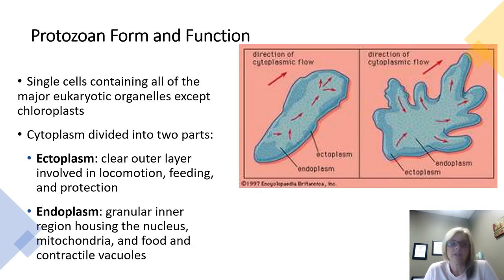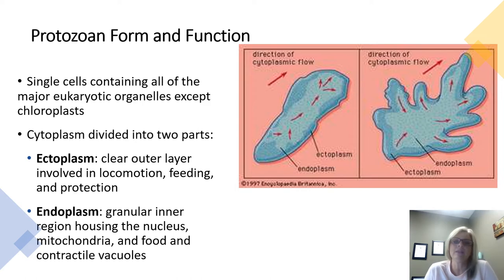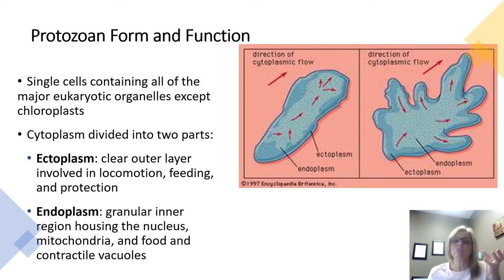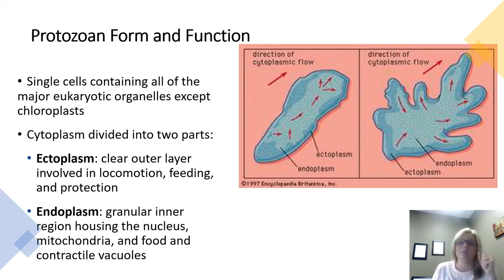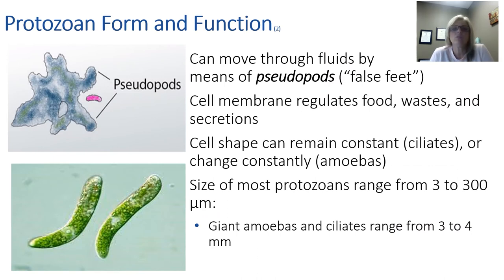Protozoa are unicellular, and they're going to have most of the same major organelles as eukaryotic organisms except for chloroplasts. The organelles are highly specialized for feeding, reproduction, and locomotion. The cytoplasm is divided into a clear outer layer called the ectoplasm and a granular inner layer called the endoplasm. The ectoplasm functions in locomotion, feeding, and protection, while the endoplasm houses the mitochondria, food, and contractile vacuoles. Some protozoa even have organelles that function like a primitive nervous system to coordinate their movement. To get around, protozoa use pseudopods, cilia, or flagella to move through fluid mediums. They do not have a cell wall, so the cell membrane regulates movement of food, water, and secretions.